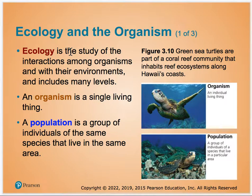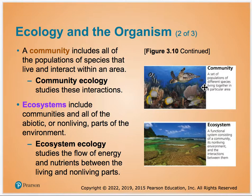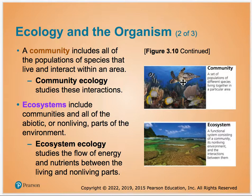In ecology, a single organism can live with a group of the same species called a population. Further up, they can live in a community of multiple species living together. That feeds into a full ecosystem where the living and non-living parts work together — for example, an ocean ecosystem would take into account the ocean water, currents, salinity, and the living things. It includes both living and non-living things.